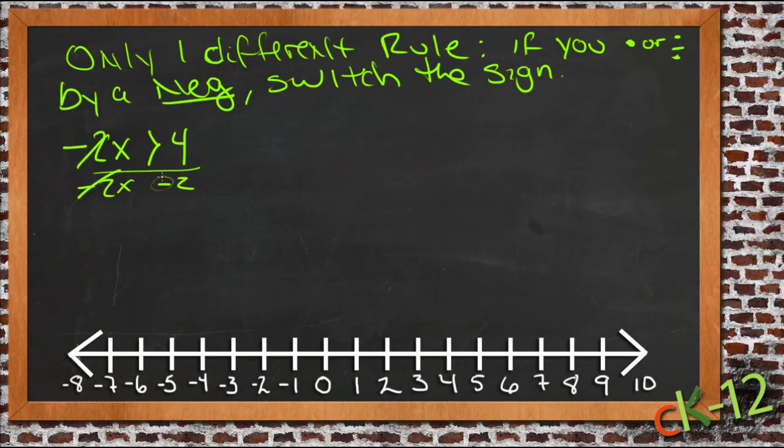When we do that, because we've divided by a negative, we switch the direction of this sign. So instead of getting x is greater than something, we have x is less than negative 2. That's it. That's the only difference between working with inequalities and working with equations, as you've been doing for quite some time.